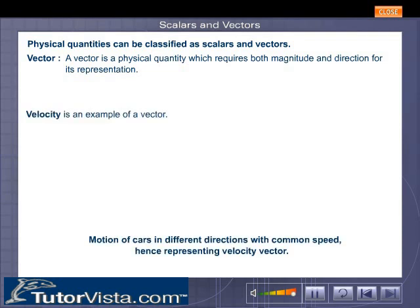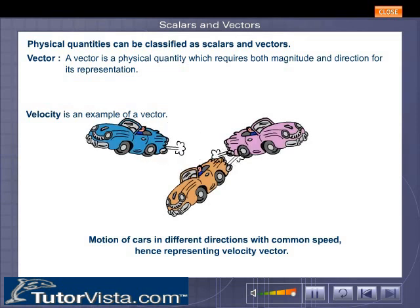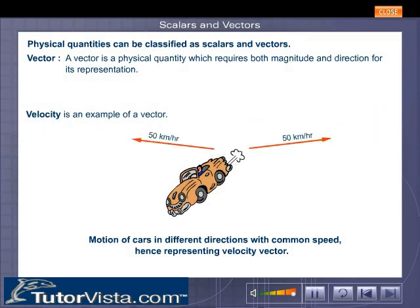Velocity is a vector. Here we see motion of cars in different directions with common speeds. They are examples of vectors.